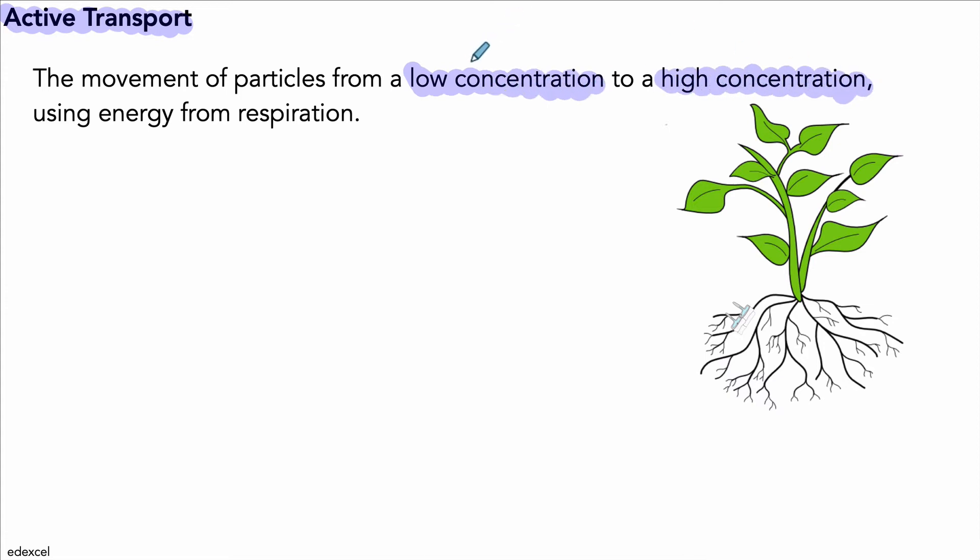That's in the opposite direction to diffusion, where particles move against a concentration gradient. The important thing to remember is that if we're moving particles against a concentration gradient, we need to use energy, and that energy comes from respiration. That's a very important part of the definition of active transport.